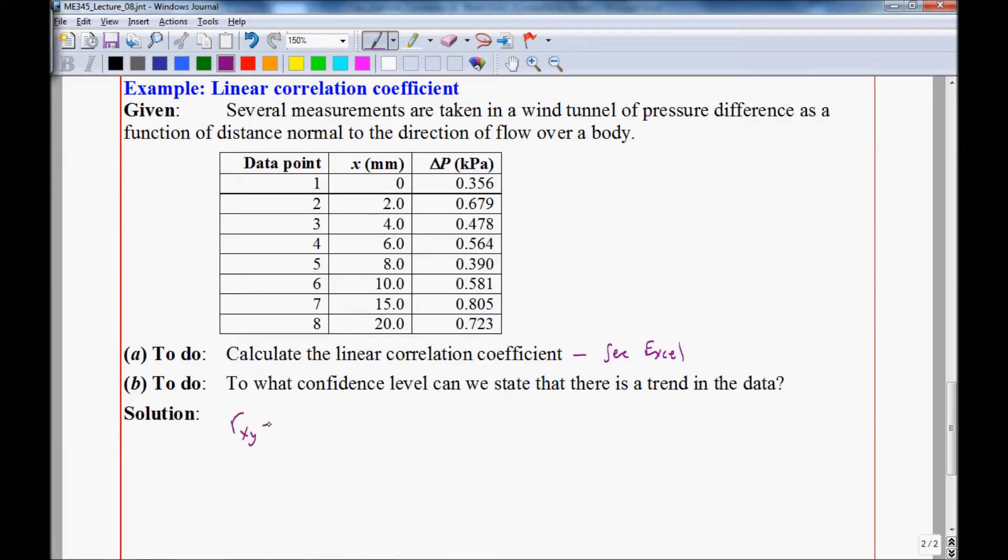And you see that we get 0.658932 as our linear correlation coefficient for these data points. So from Excel, we have the linear correlation coefficient rxy equals 0.6589. I give it to four significant digits. We know that n equal 8. There's eight data points. So again, we'll interpolate.